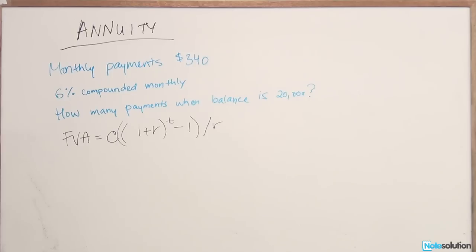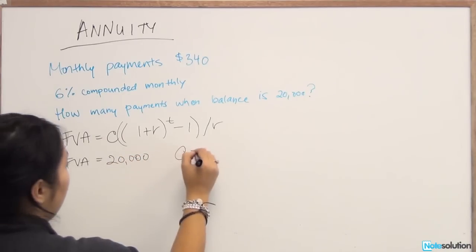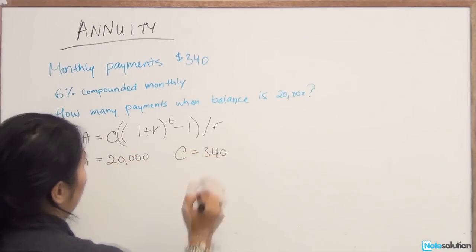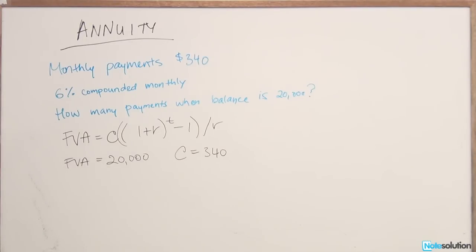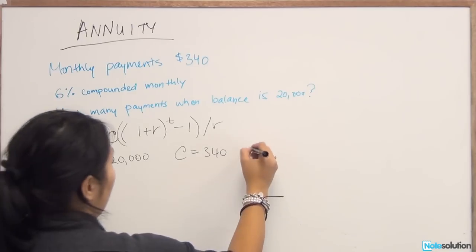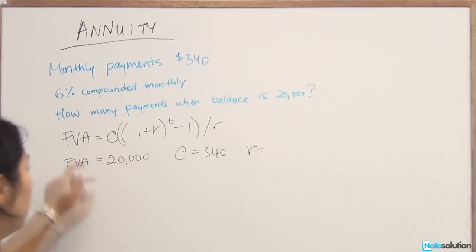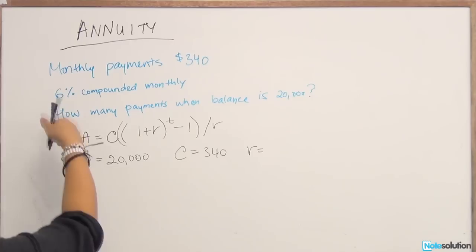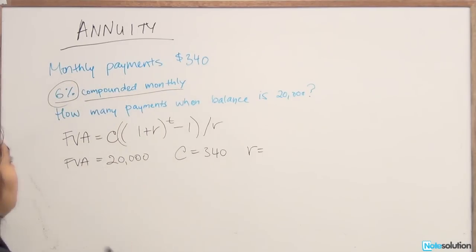Once we review the question, we can see that we have most of the inputs. So we know our future value of annuity is 20,000. Our C is equal to $340, so we're making payments of $340 every month. Now our r is equal to 6%, so that's 6% compounded monthly. To bring it back into monthly terms, we want to take 6% and divide it by 12, because this is a yearly rate and we want to put it in monthly terms.